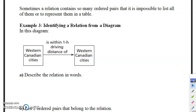Hello everybody, welcome back. In this video we're going to finish up section 5.1 representing relations. Sometimes a relation contains so many ordered pairs that it's impossible to list all of them or to represent them in a table. For example, Western Canadian cities is within one hour driving distance of a second Western Canadian city.